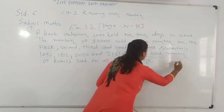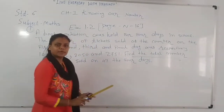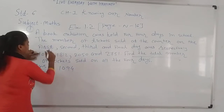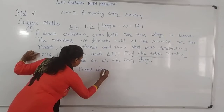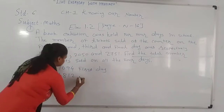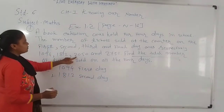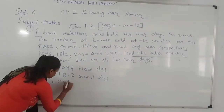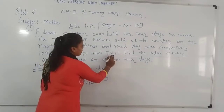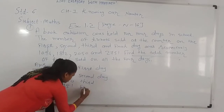We are going to find the total number of tickets sold on all four days. So: 1,094 is the first day, 1,812 is the second day, 2,015 is the third day, and 2,751 is the final day.